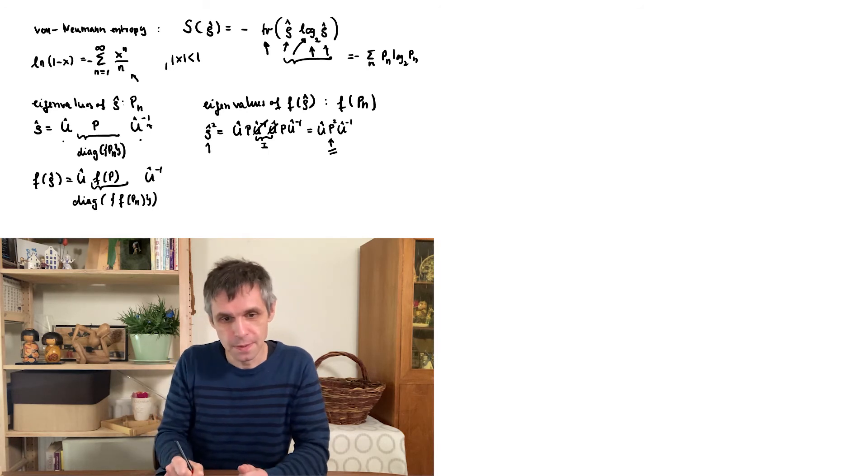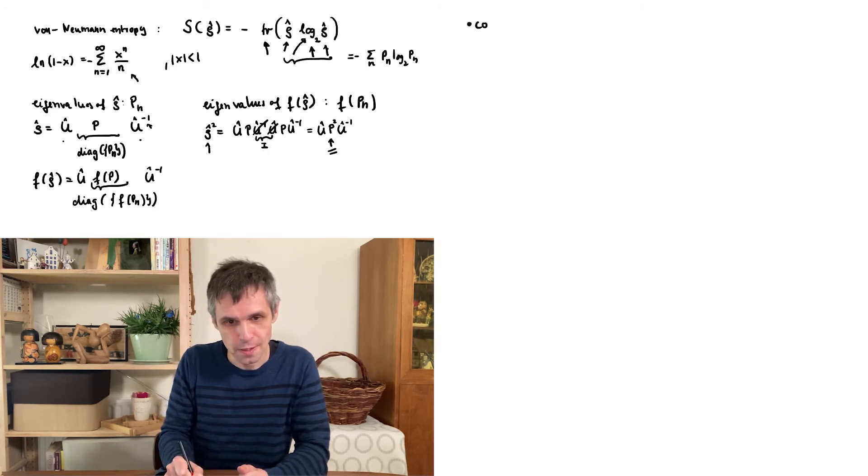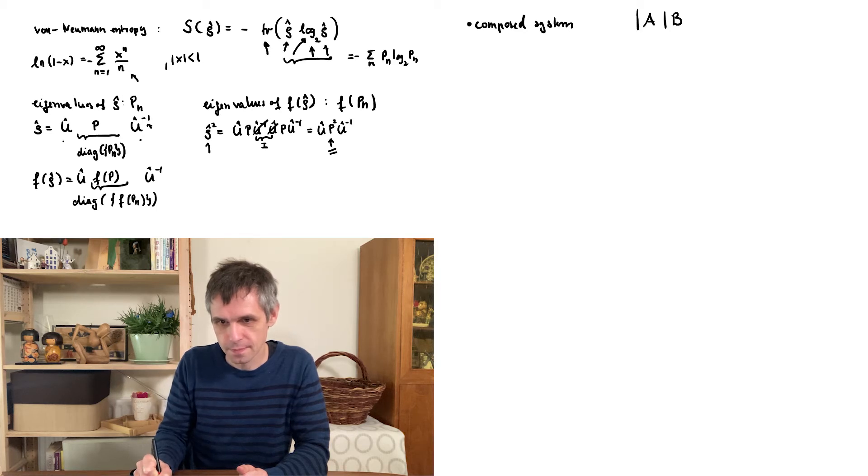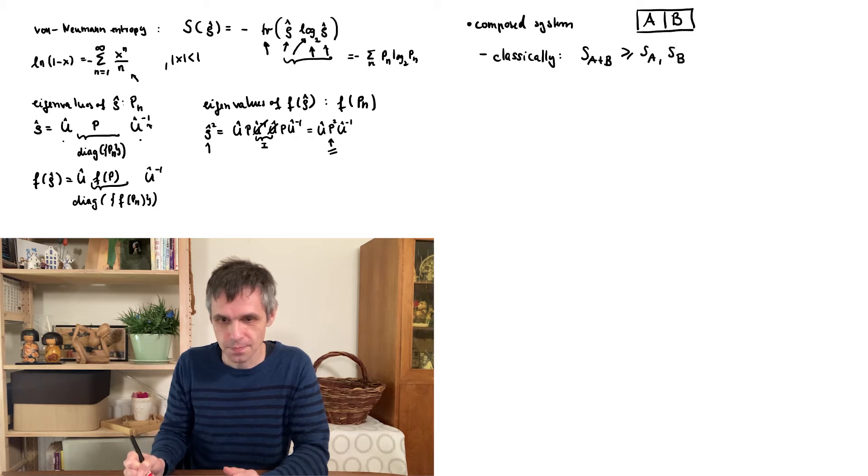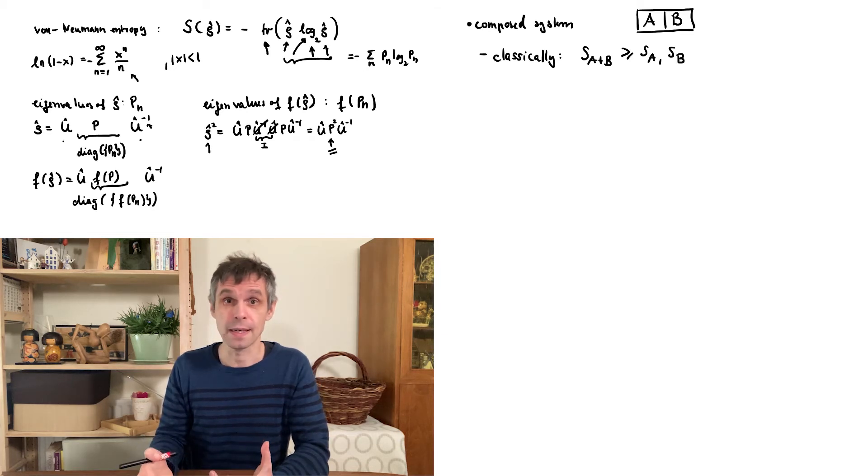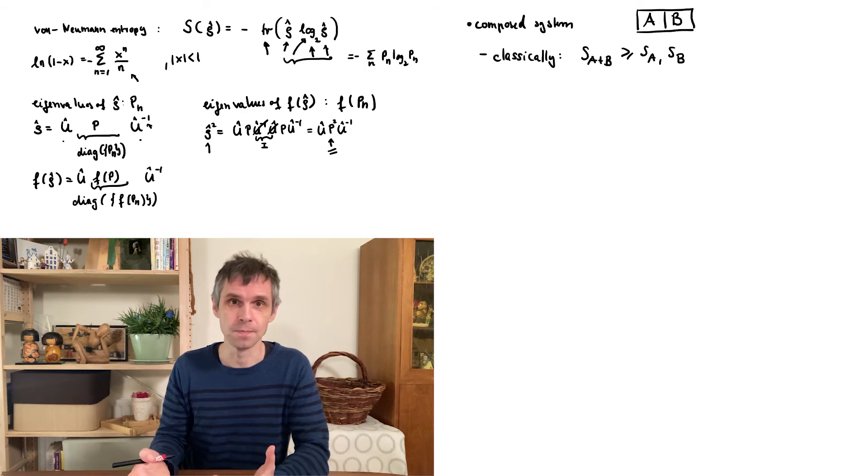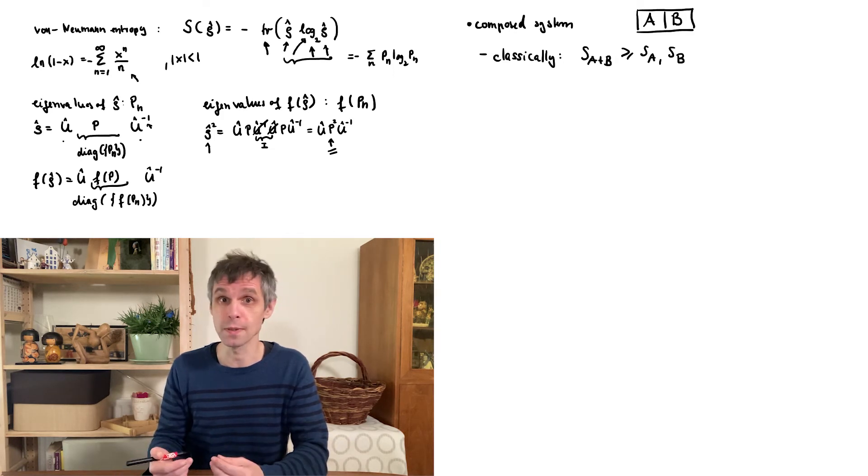And we see this now directly when we look at some very important examples. And the most important example is the case of a composed system. I'm going to call the parts A and B. Classically, one can then see based on very general considerations that the entropy of the composed system will never be smaller than the entropy of any of the two subsystems. So generally, increasing the size of a classical system will increase the entropy. Indeed, in thermodynamics, the entropy is an extensive quantity, so it is proportional to the volume of the system.